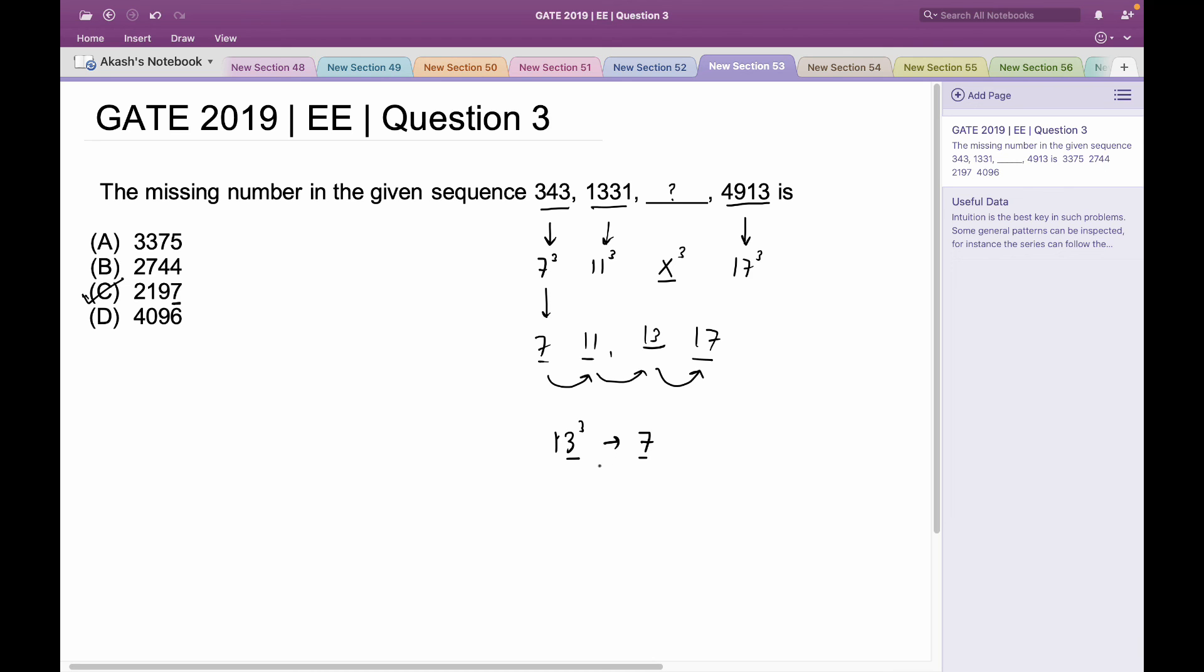So the cube of 13 is 2197, which matches with option C. Therefore, option C is the right answer. Thank you.